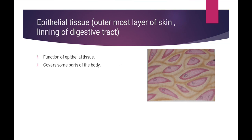Epithelial tissue is also called the outermost layer of skin. It is found in the lining of the digestive tract – yaani hamare digestive system mein jo ek line hoti hai. Just as epithelial cells are found on the surface of our skin, epithelial tissue's function is to cover some parts of the body – yaani yeh hamaari body ke organs aur parts ko cover karta hai.